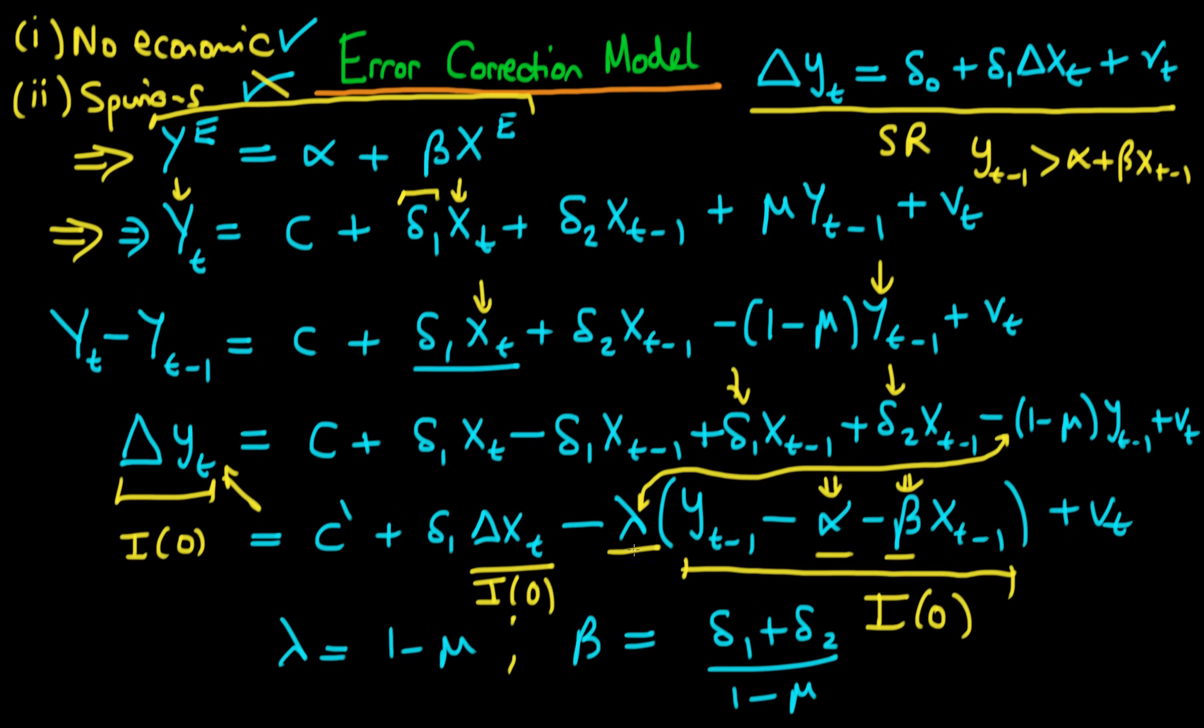So if y is above its equilibrium value then we take off a little bit of y. So the change in yt will be slightly negative. Hence we correct the error in the last period to adjust further towards the equilibrium value of y. And this sort of error correction mechanism is why we call this an error correction model.